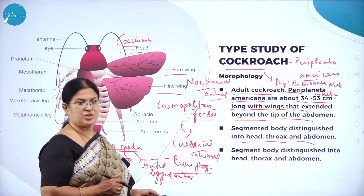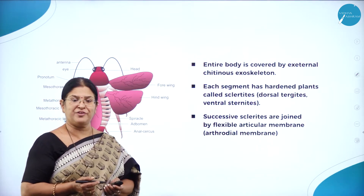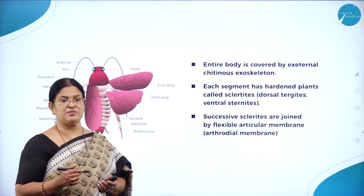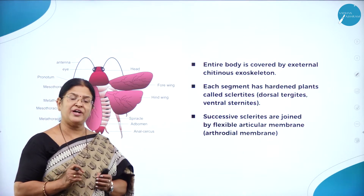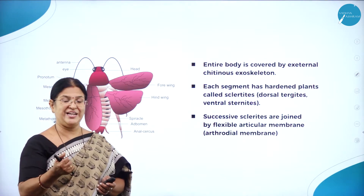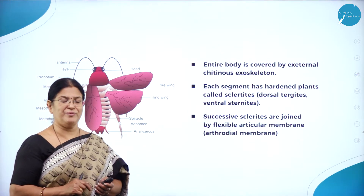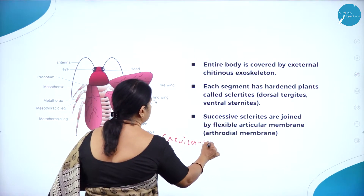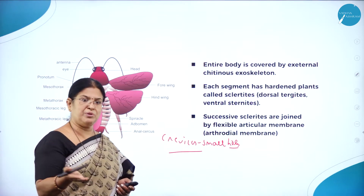Periplaneta americana belongs to phylum Arthropoda, class Insecta — a nocturnal, cosmopolitan feeder and cursorial animal. Cockroach is harmless, yet many people are afraid of it. It is a very common pest — you can barely find a house without one. Common pest control products like Laxman Rekha and Hit are used to get rid of this household pest, but cockroaches remain dominant as they live in crevices — small holes in cupboards or shelves.